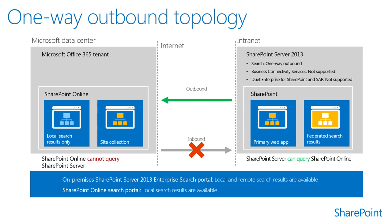A one-way outbound hybrid topology can only be used for outbound search solutions. A one-way outbound topology does not support hybrid solutions for business connectivity services, SAP with Duet Enterprise Online, or bi-directional search.